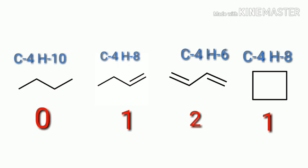C4H10 has no double bond, so degree of unsaturation is 0. C4H8 has 1 double bond, so degree of unsaturation is 1. C4H6 has 2 double bonds, so degree of unsaturation is 2. Cyclobutane has 1 ring, so degree of unsaturation is 1. Remember this trend — it is very important.